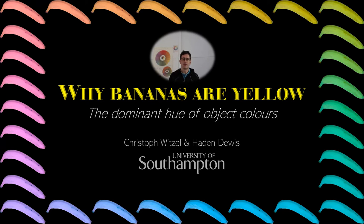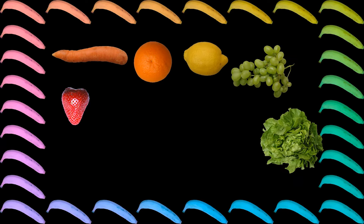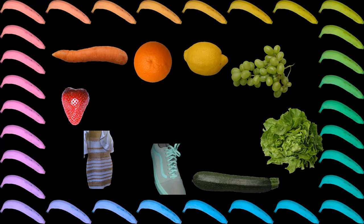Bananas are an example of objects that are perceived as having one single color. That one color is the typical color of bananas. Of course, this talk is not just bananas, but it applies to all kinds of realistic stimuli that are perceived as having specific colors.